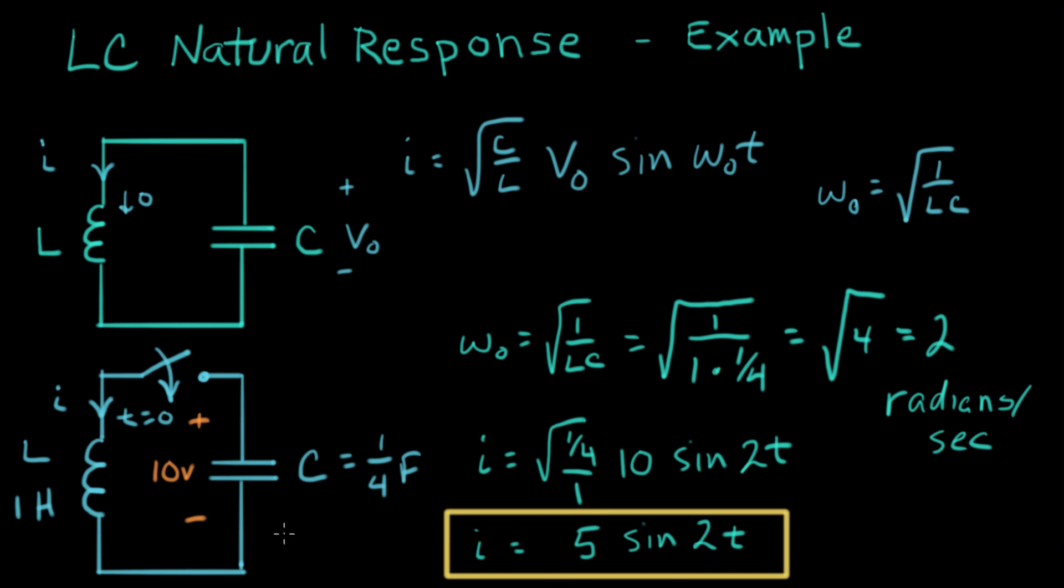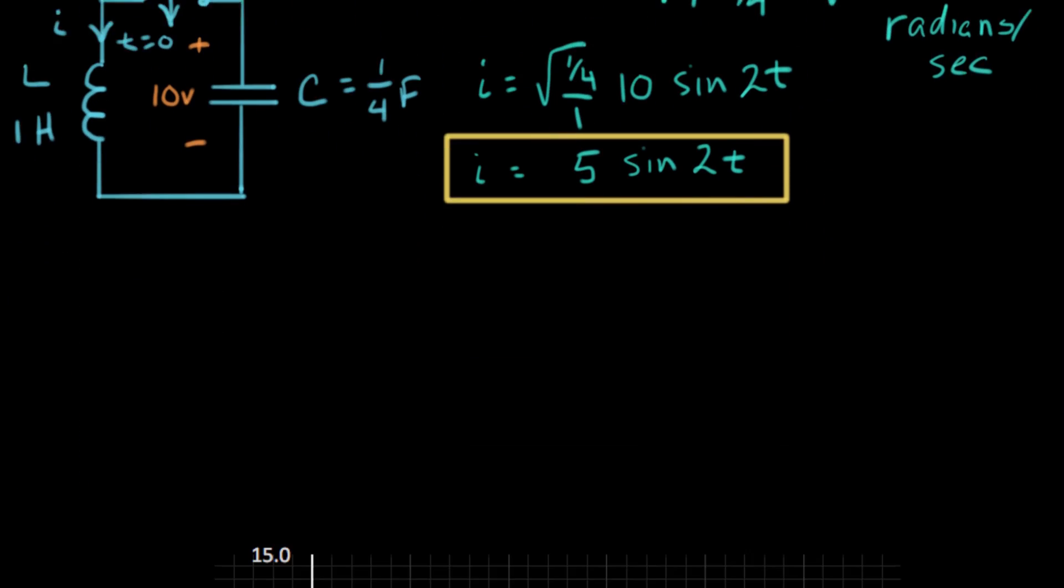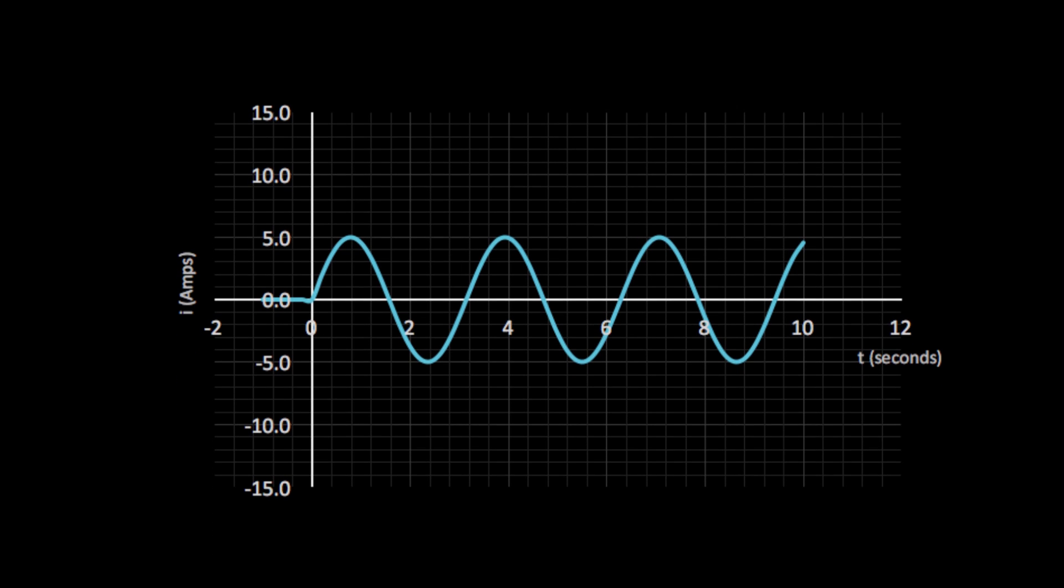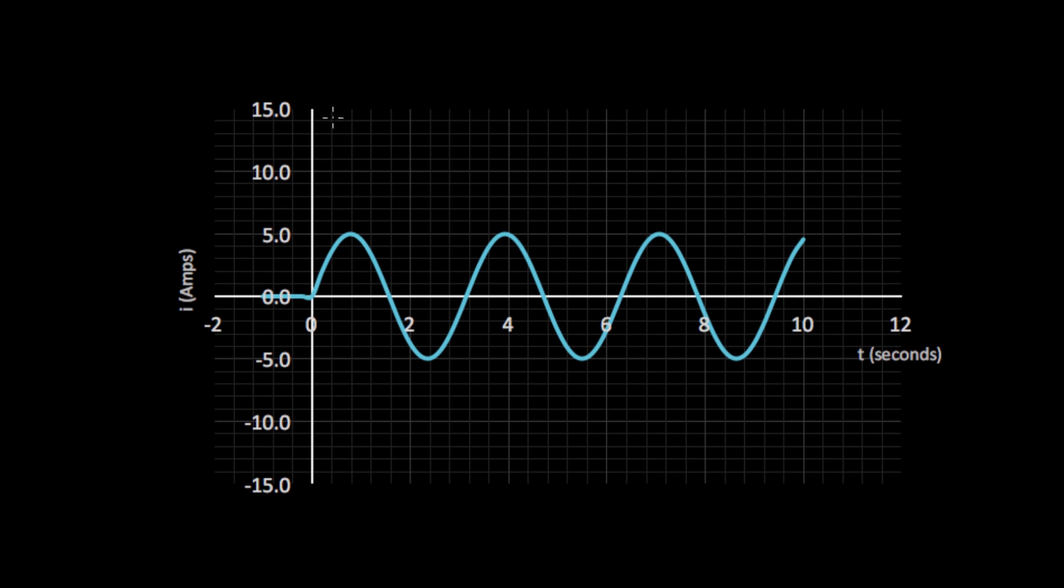I equals five sine two T. So for this specific circuit, that's the answer for this current here. Now I want to show you what that actually looks like. So this is a plot of I of T equals five sine two T. And this is what a sine wave looks like, with time.